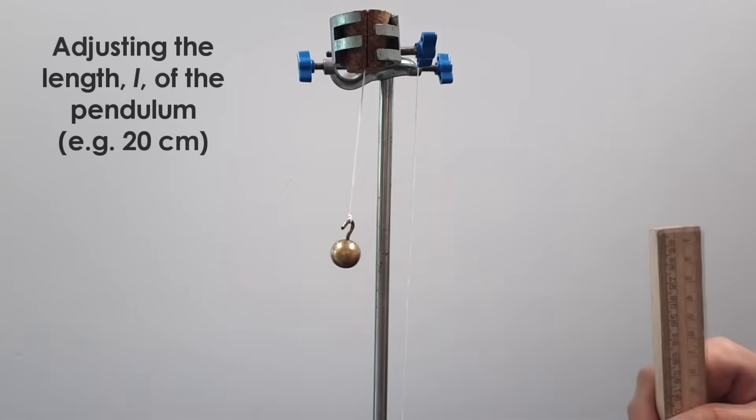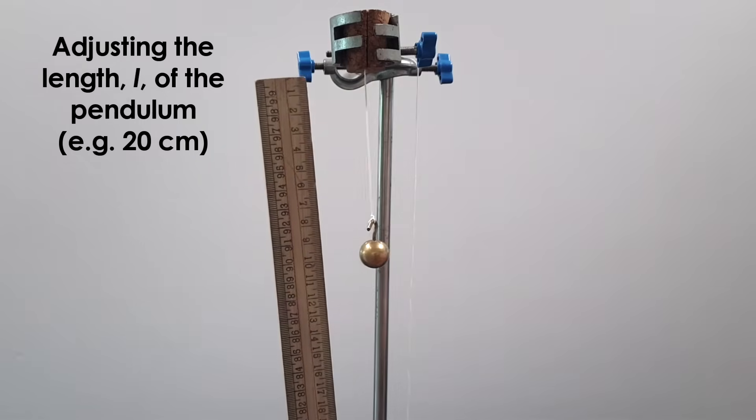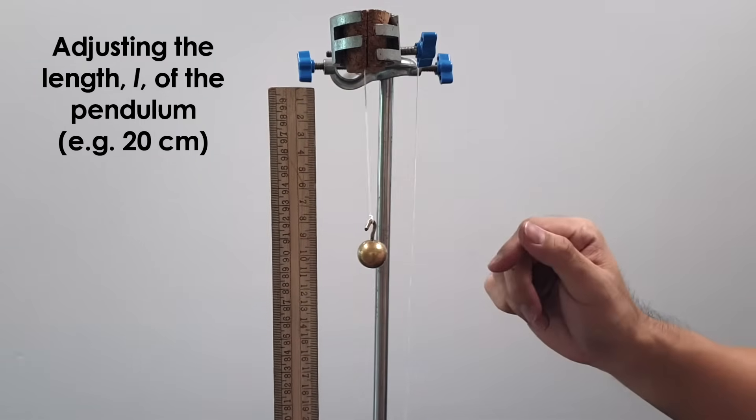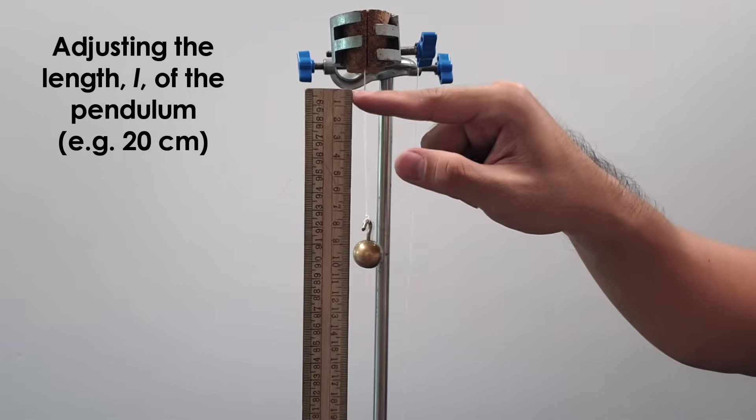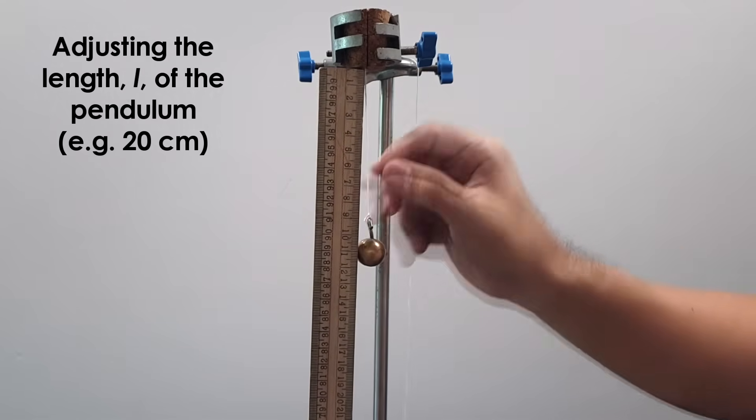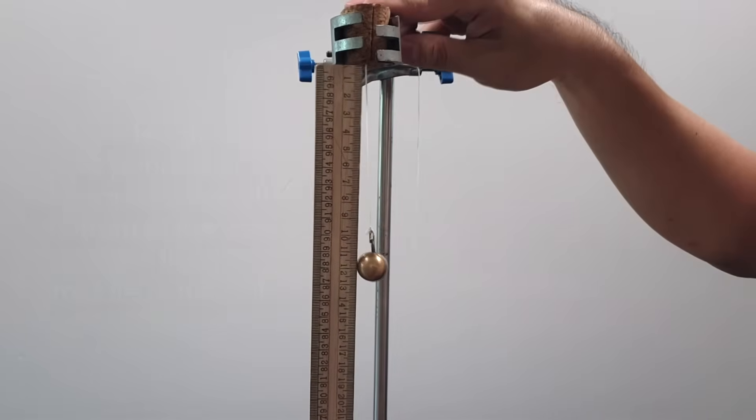Next, to measure the length of the pendulum bob. Let's say it's 20 cm. You'll be given a meter rule, so you put one end of the meter rule with the zero marking underneath the cork. And what you need to do is to loosen the clamp a little bit.